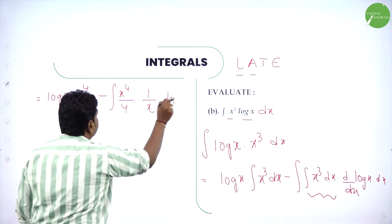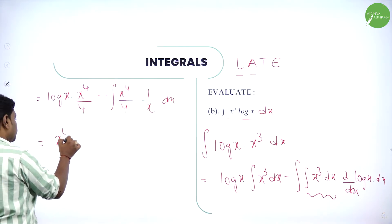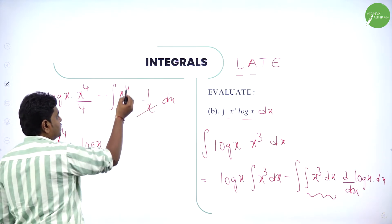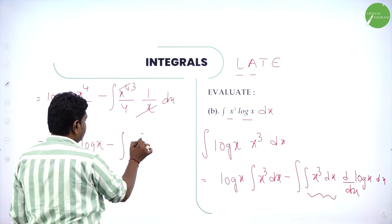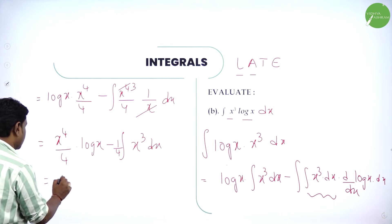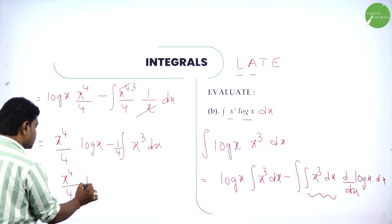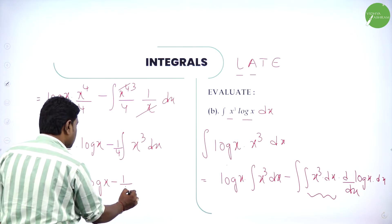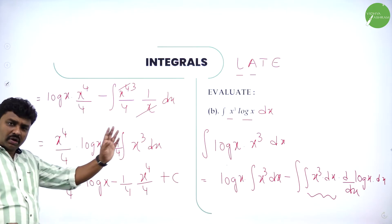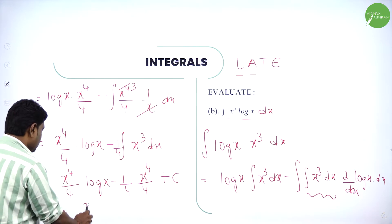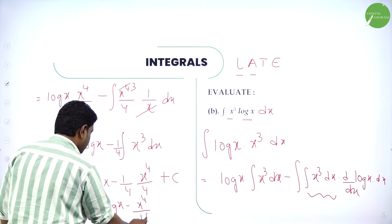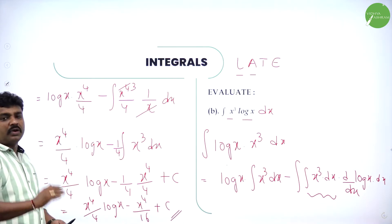So: x⁴/4·log(x) minus — cancel x from x⁴/4 and 1/x, leaving x³ — so minus integration of x³/4 dx. Take 1/4 out: x⁴/4·log(x) minus (1/4)·(x⁴/4) plus c. After integrating x³ we get x⁴/4. So the final answer is x⁴/4·log(x) minus x⁴/16 plus c.